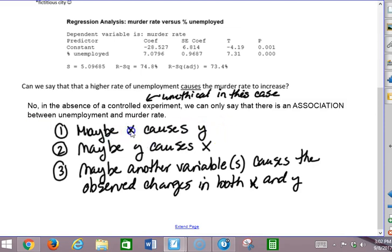Maybe X causes Y. Maybe unemployment rate, unemployment percent does cause murder rate. Maybe murder rate causes people, more people to be unemployed. Probably not. But maybe higher murder rate causes businesses to move out of the area and people become unemployed. It's a possible explanation.